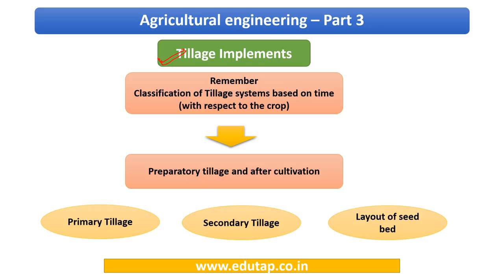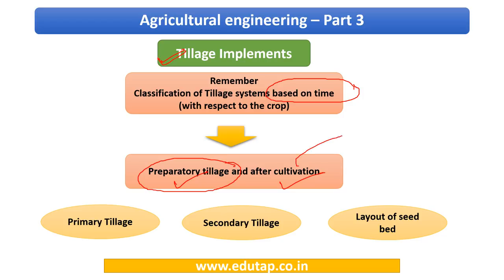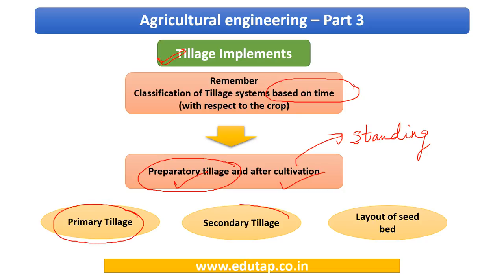A quick recap: the classification of tillage based on time with respect to the crop includes preparatory tillage and after-cultivation. Preparatory tillage means you haven't started sowing yet — you are preparing the seed bed. After-cultivation means you are doing tillage operations in the standing crop. Preparatory tillage is further classified into primary tillage, secondary tillage, and layout of seed bed. In this lecture, we will cover primary and secondary tillage implements.